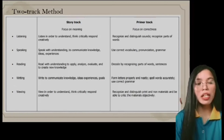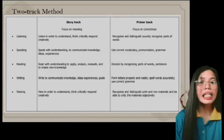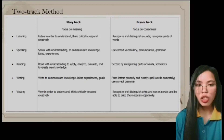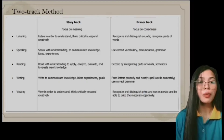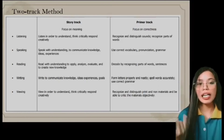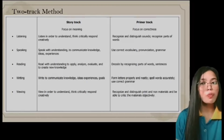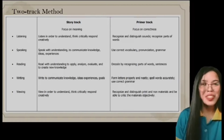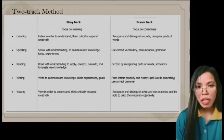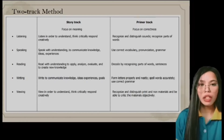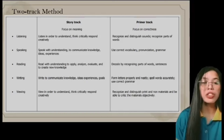In the primary track for speaking, students use correct vocabulary, pronunciation, and grammar. In the reading story track, students read with understanding to apply, analyze, evaluate, and create new knowledge. In the primary track for reading, students decode by recognizing parts of words or sentences. In the writing story track, students write to communicate knowledge, ideas, experiences, and goals. In the primary track for writing, students form letters properly and neatly, spell words accurately, and use correct grammar. In the viewing story track, students view in order to understand, think critically, and respond creatively. In the primary track for viewing, students recognize and distinguish print and non-print materials and critique them objectively.